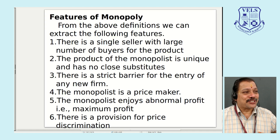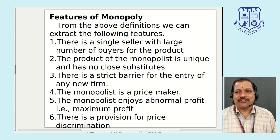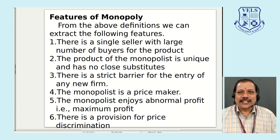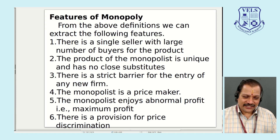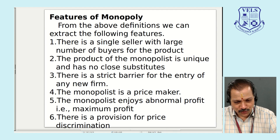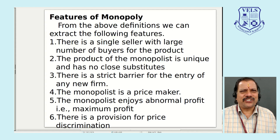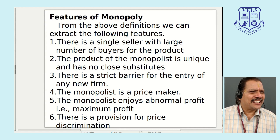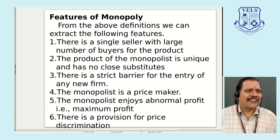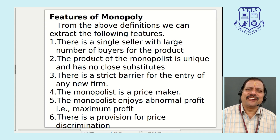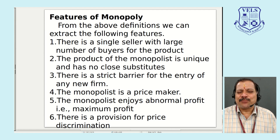If asked what a price maker is: first explain what monopoly is, then state that one of its features is that it is a price maker because it fixes its own price and others cannot interfere. The fifth feature is that the monopoly always enjoys abnormal profit — maximum profit — because it is the only seller, nobody can enter the market, and it can fix a very high price.